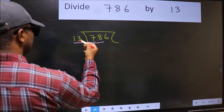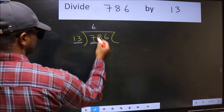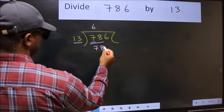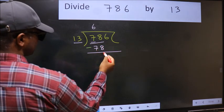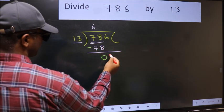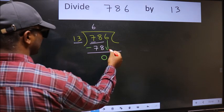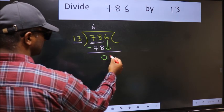When do we get 78 in 13 table? 13 times 6 is 78. Now we should subtract. 78 minus 78 is 0. After this, bring down the beside number, so 6 down.